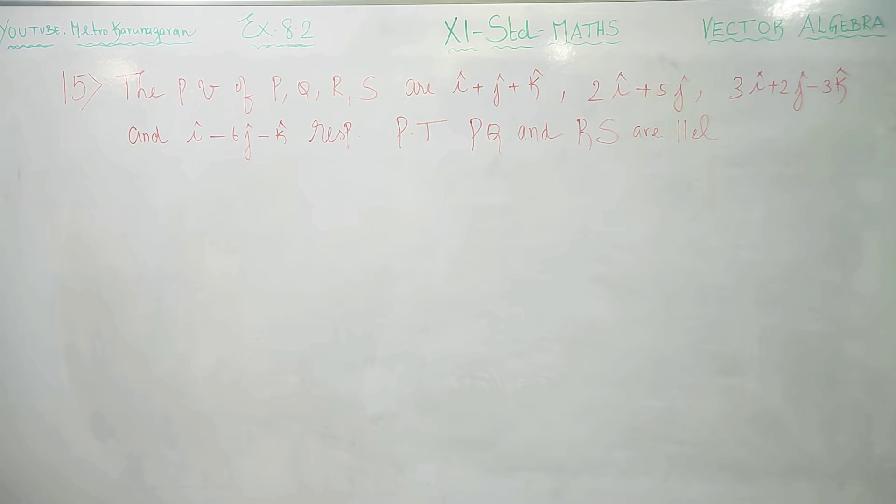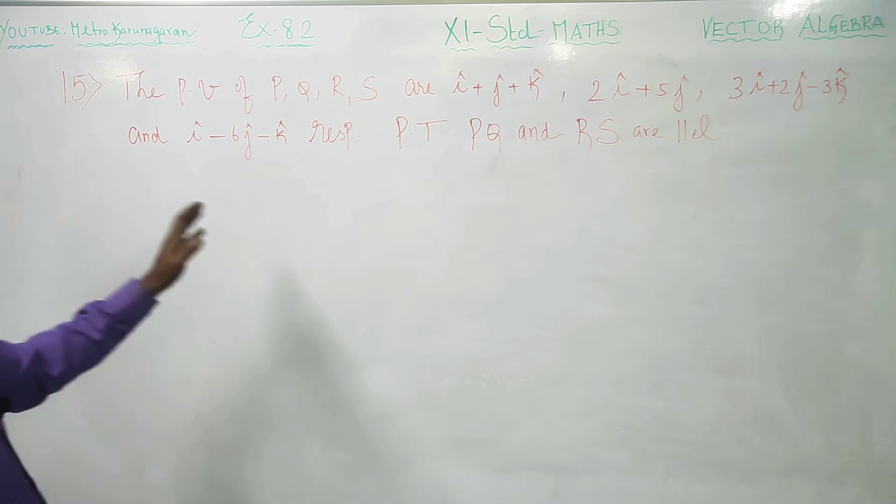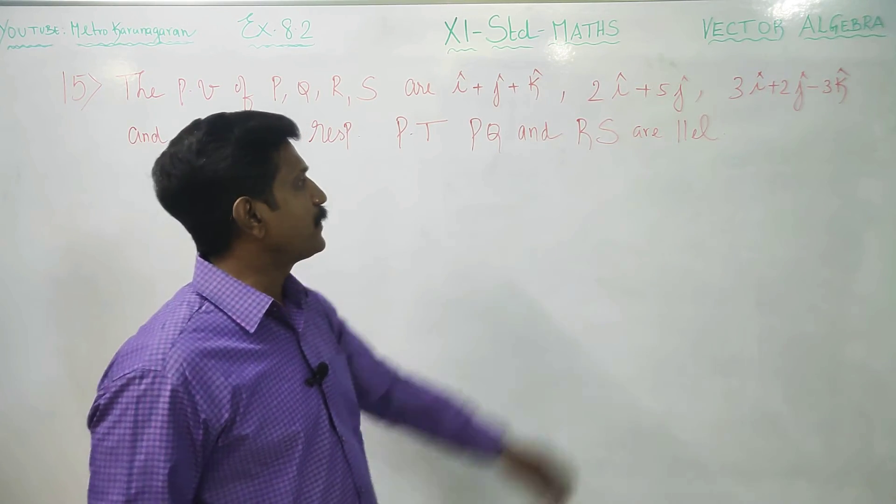Dear 11th standard students, in exercise number 8.2, sum number 15, the position vectors of PQRS are given. Prove that PQ and RS are parallel.